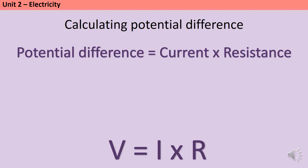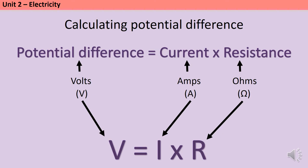R is obviously for resistance, and V makes sense if you know that another name for potential difference is voltage, although AQA prefer potential difference and that's what they use in their exam papers. I'm reliably informed that the I comes from the French for basically intensity of current. As with all of these equations you need to know the units: volts for potential difference, amps or amperes to give it its full name for current, and ohms for resistance.